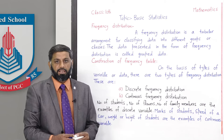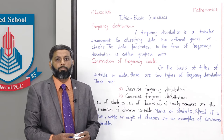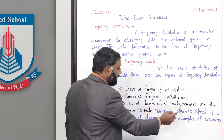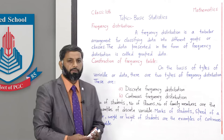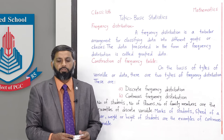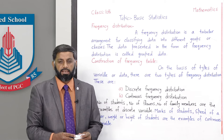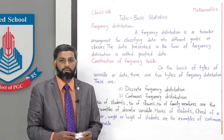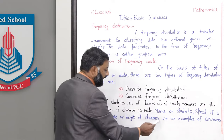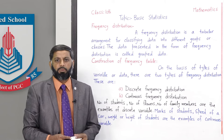Discrete variable ایسا variable ہوتا ہے جس میں variable کی values decimal میں possible نہ ہوں۔ Number of students، number of flowers، number of family members are examples of discrete variable. ایک class میں 30، 20، یا 15 students ہو سکتے ہیں — یہ تمام values discrete ہوں گی۔ While marks of students، speed of a car، weight اور height of students are examples of continuous variable.